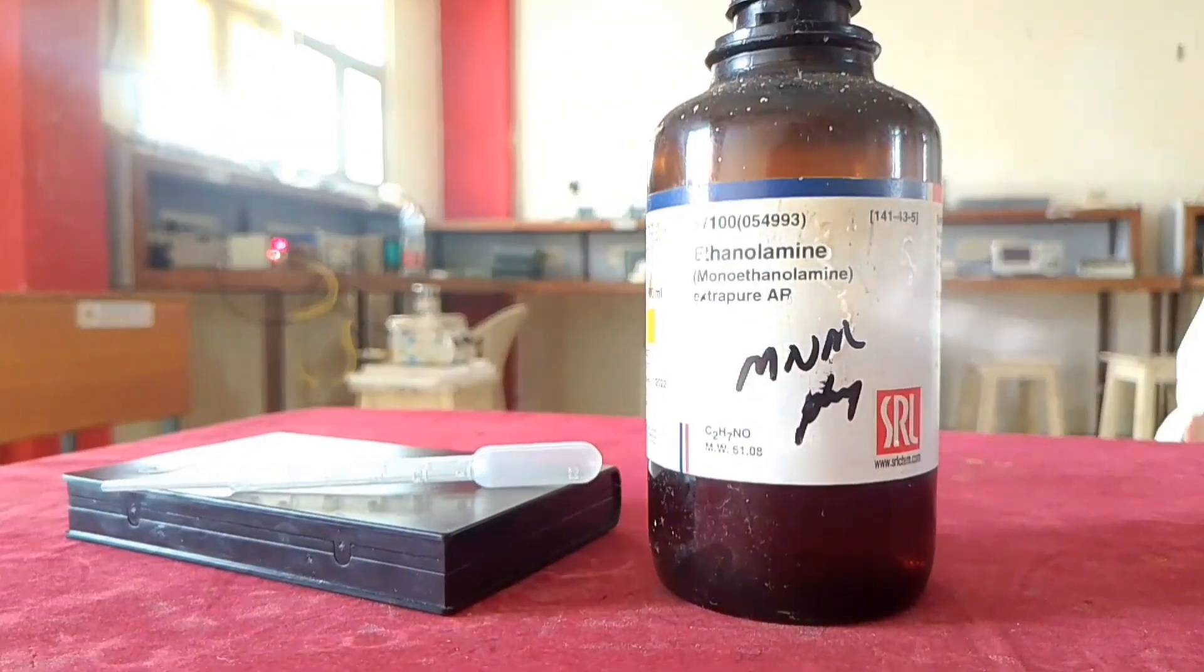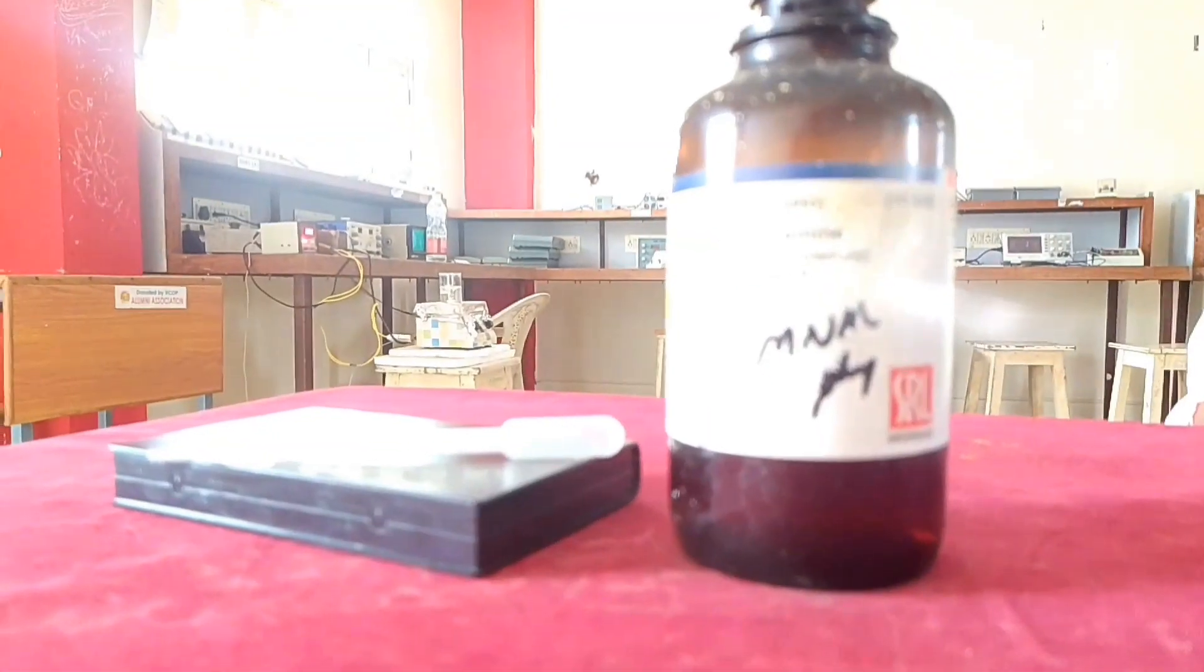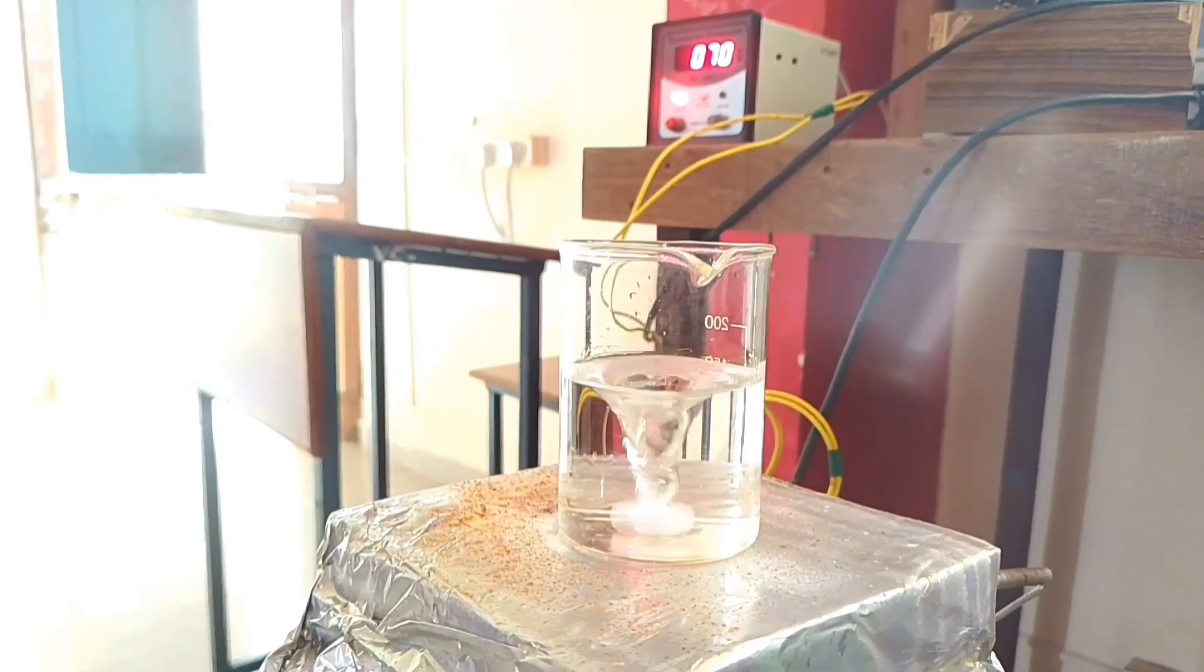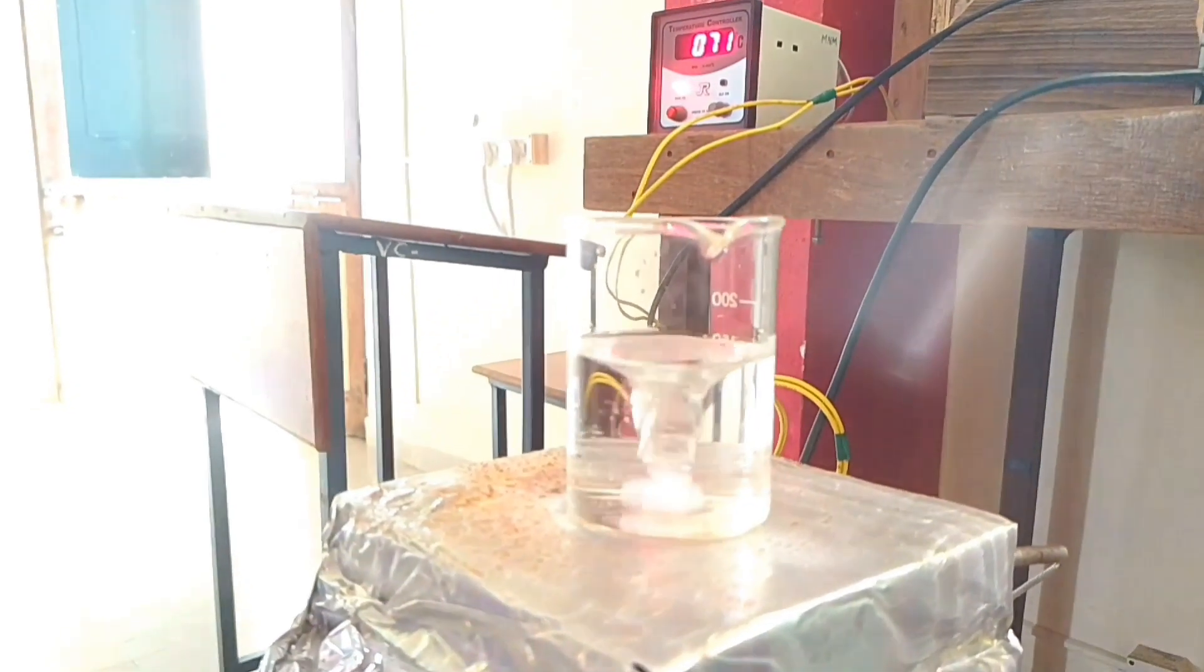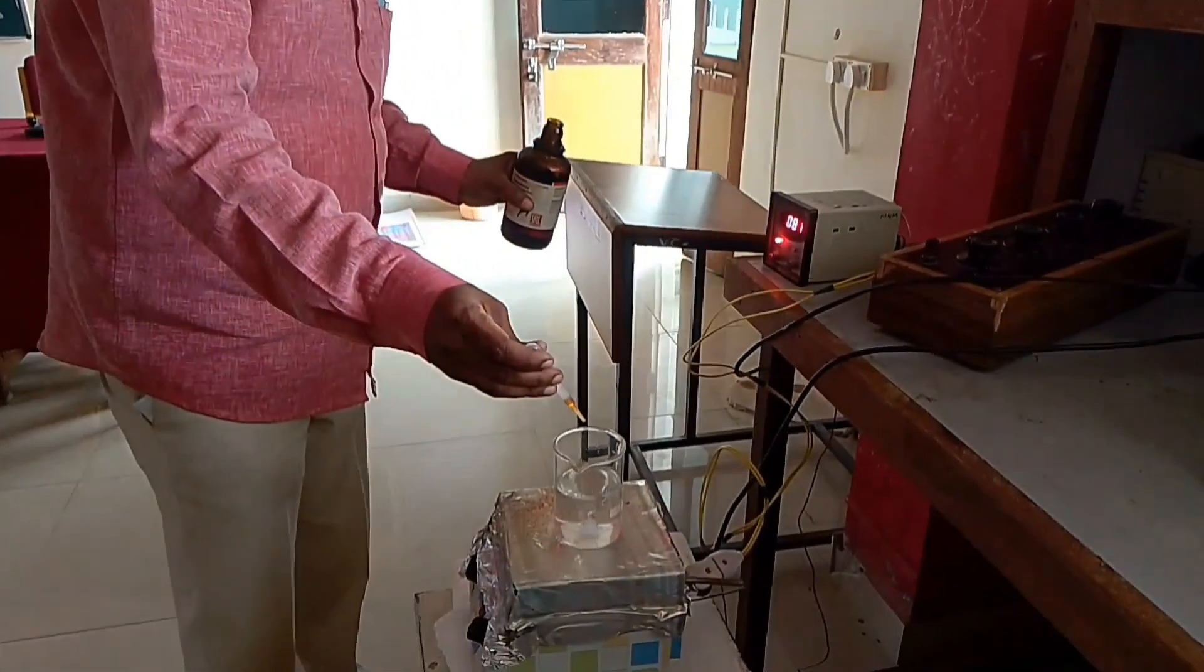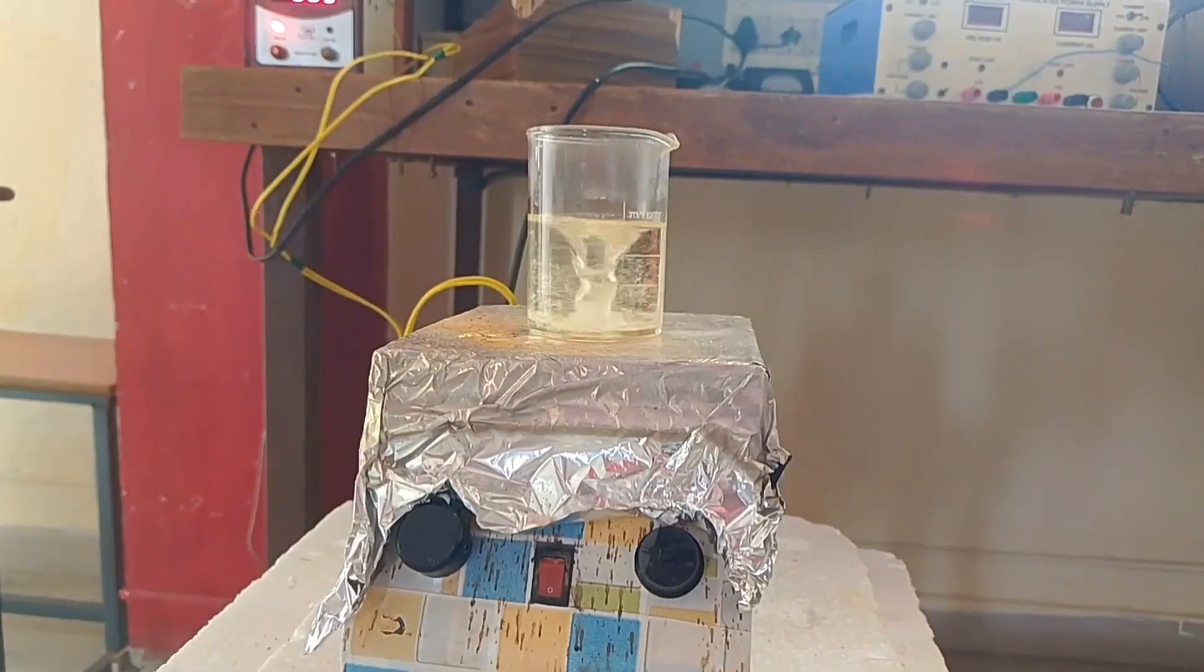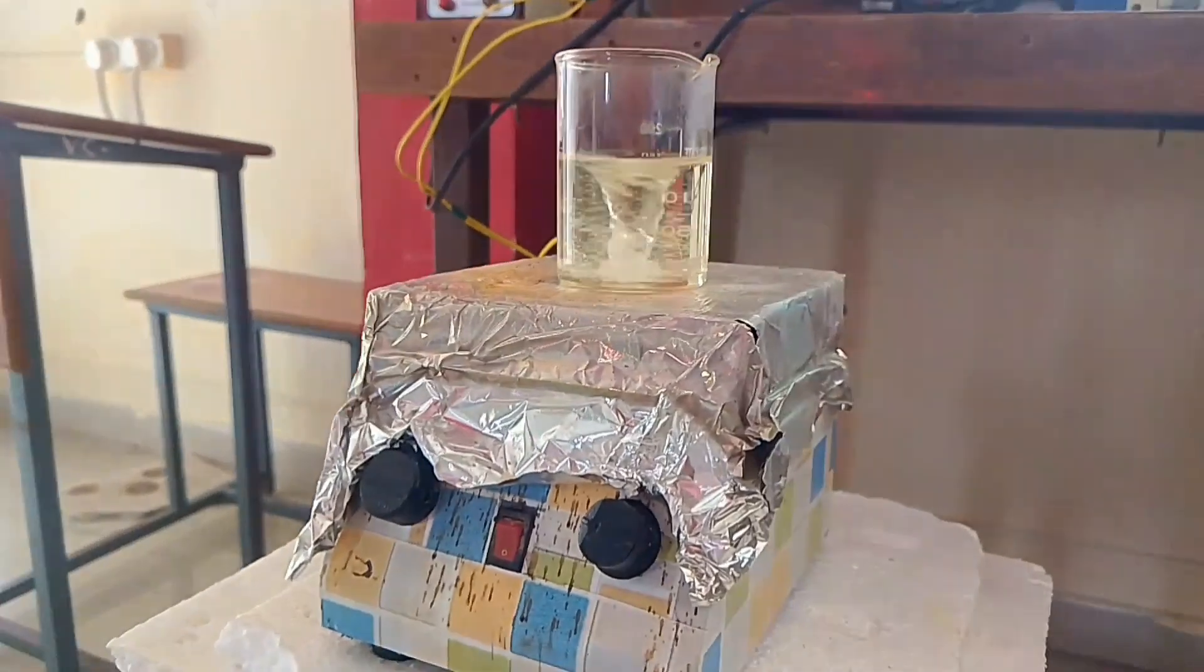After five minutes of stirring then I am going to add nearly 1.8 to 2 ml of monoethanolamine. Monoethanolamine is going to control the pH value, not only pH value it is going to control the particle agglomeration and it is helpful in controlling the uniform particle size. It is continuously stirring; you can see a homogeneous zinc complex solution is obtained.